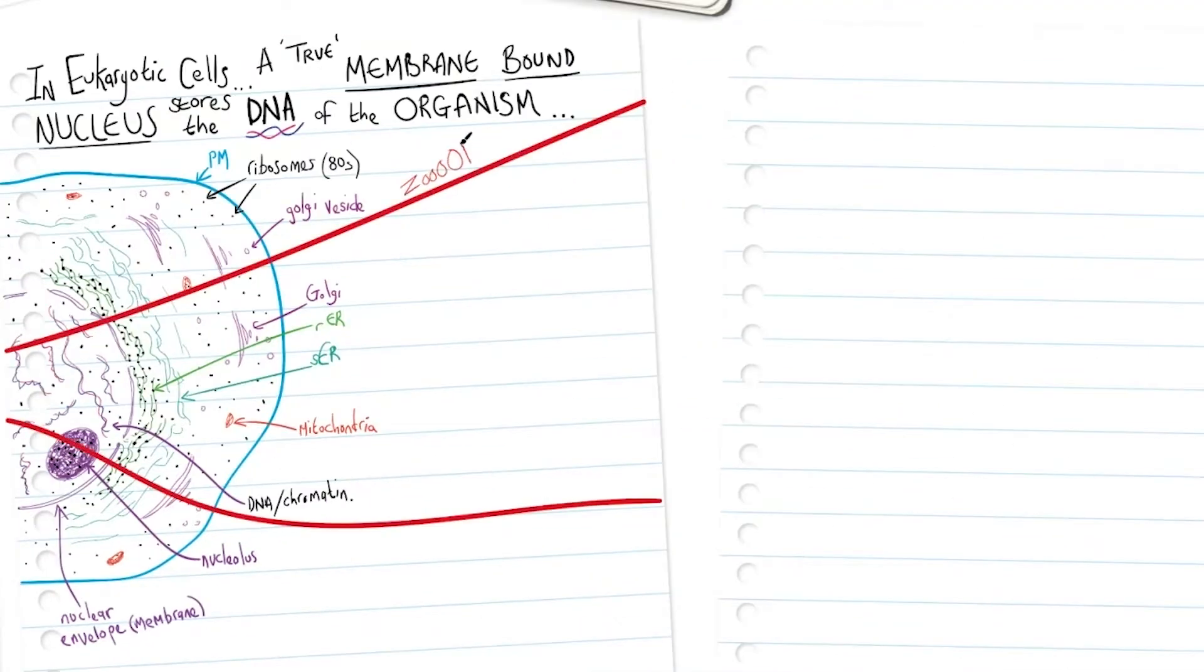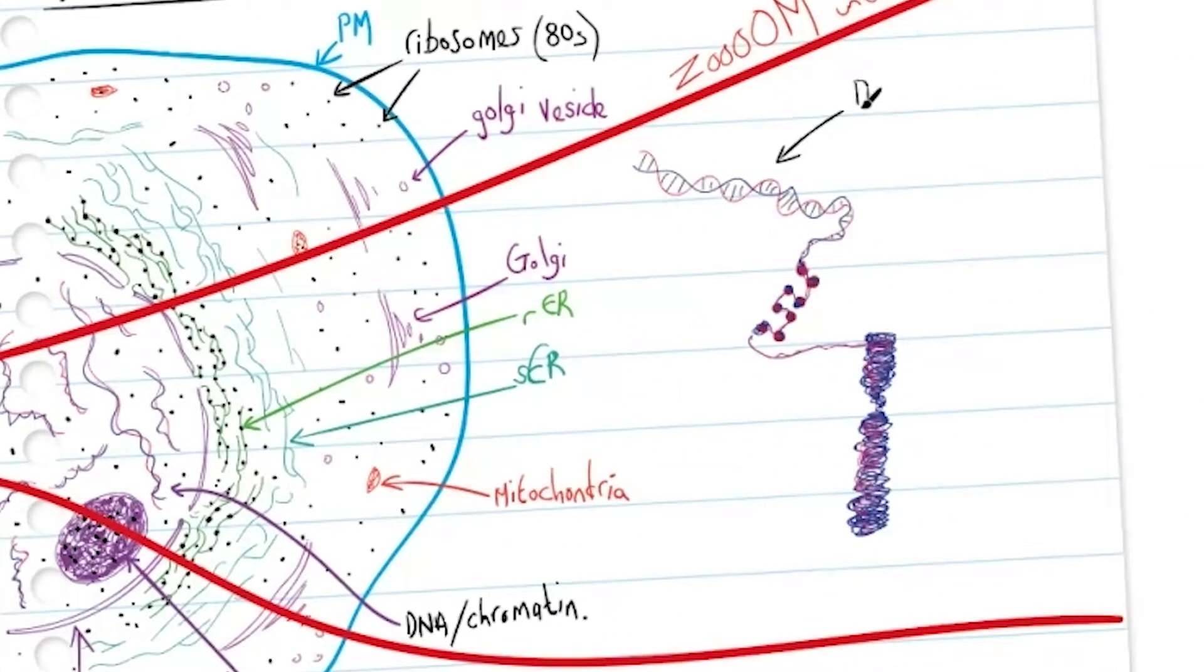So if we zoom into the nucleus, we're able to see the DNA and how it associates with histones and wraps up into chromosomes. Here it is, the DNA which wraps around proteins called histones, which are then super coiled to form the chromosome.